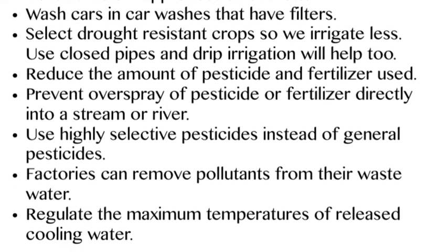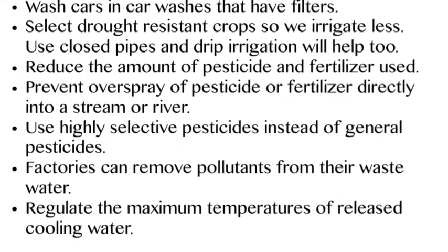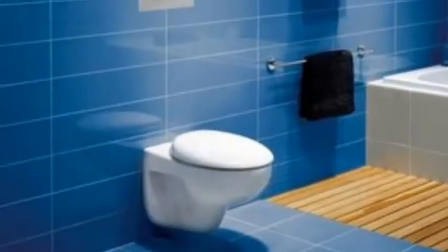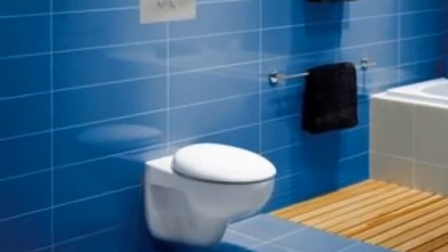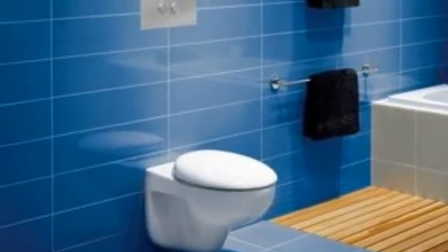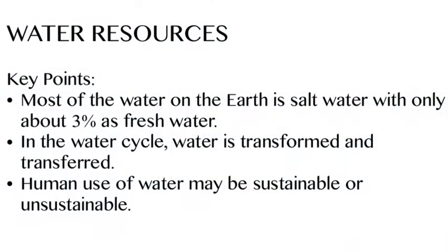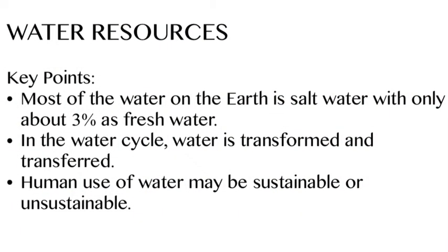Reduce the amount of pesticides you use and make sure they're specific to what you're trying to fight. Regulate what temperature water goes back into rivers. These are all things we can do — there are solutions, but we've got to start doing them.